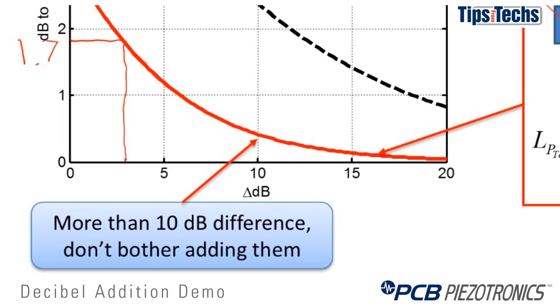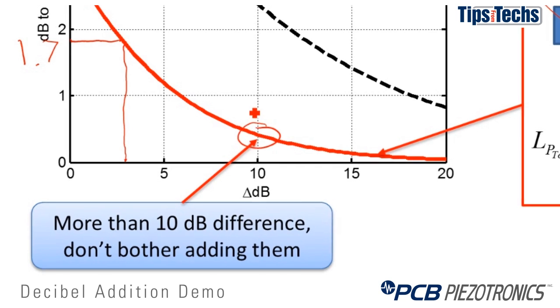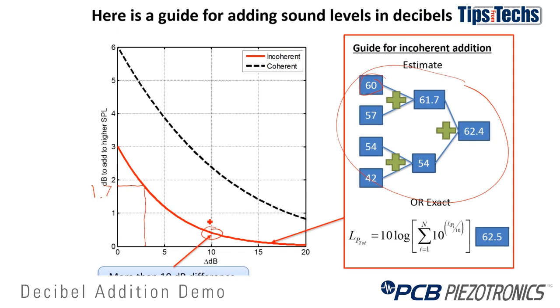Note that for incoherent sources we typically ignore any sound pressure level difference greater than 10 dB since two sources more than 10 dB apart do not significantly add level to the higher SPL. This becomes an important point when discussing background noise in our measurements, which we'll discuss in a different demonstration.